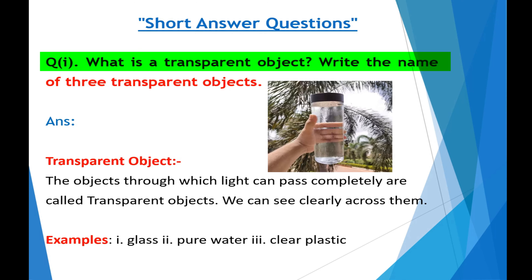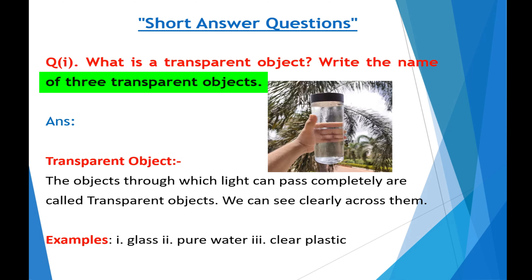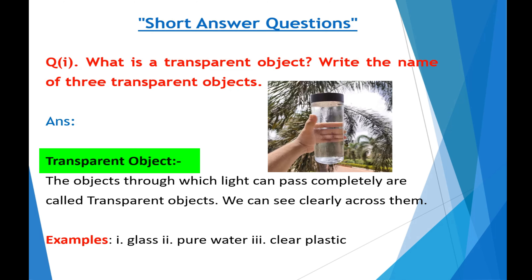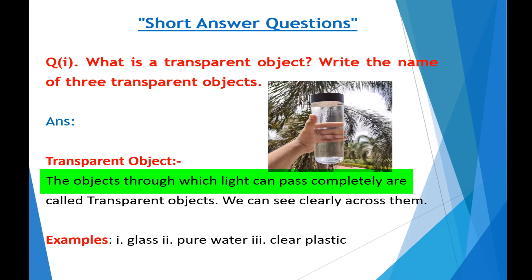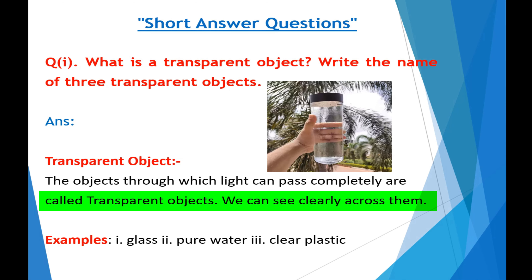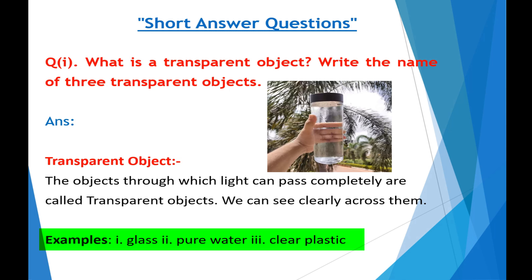What is a transparent object? Write the name of three transparent objects. Answer: Transparent objects are the objects through which light can pass completely. We can see clearly across them. Examples: Glass, pure water, and clear plastic.